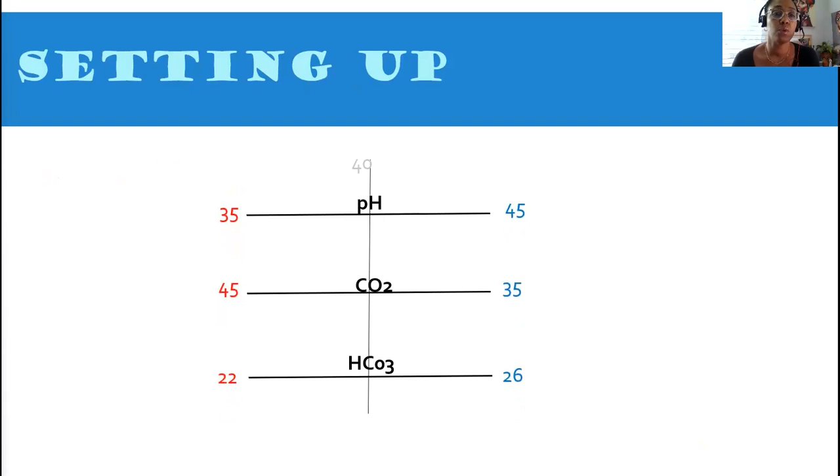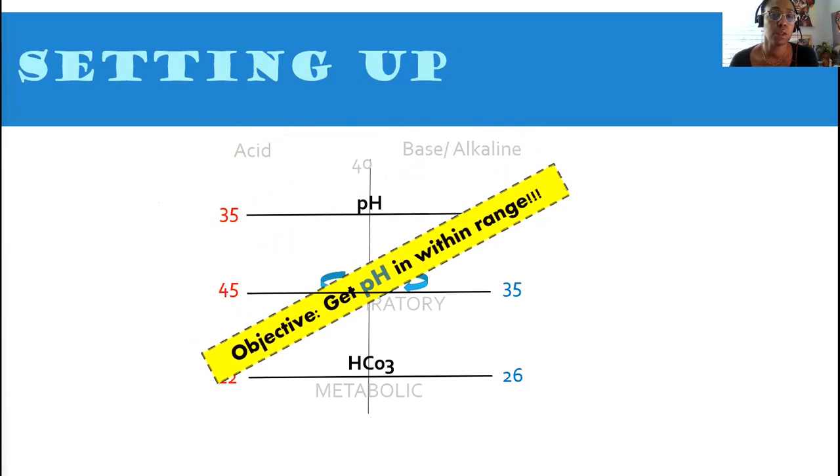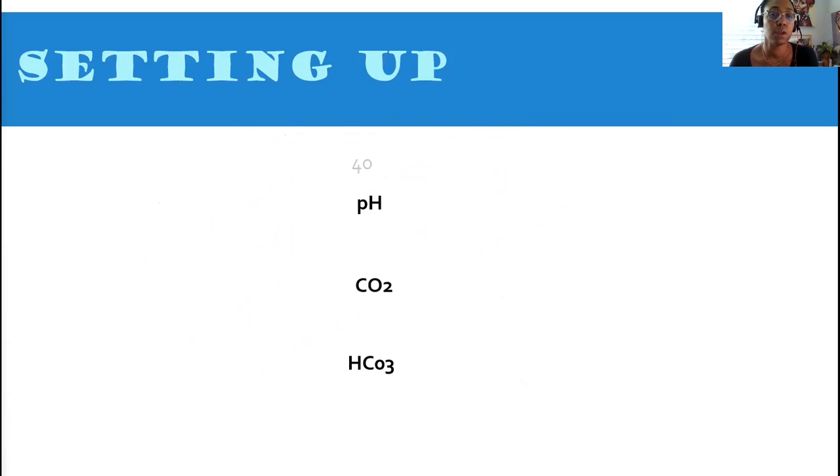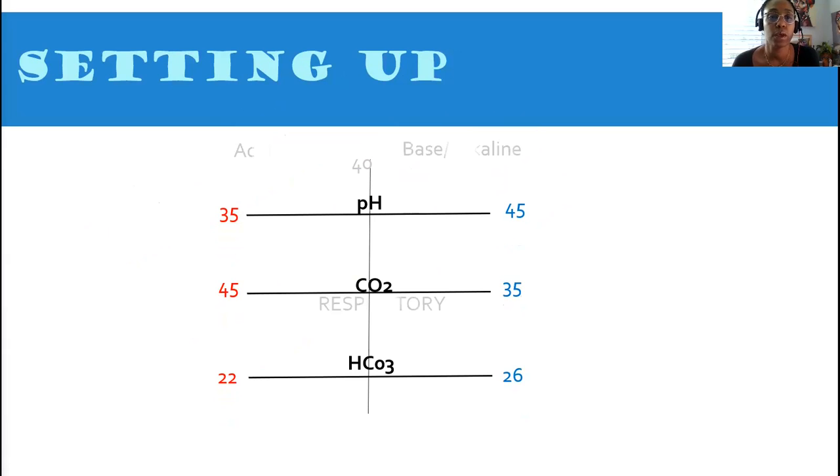You're going to put your normal ranges for your pH, which is 35 to 45. Your CO2, 45 to 35. But remember to switch up the range. We're going to put our pH, 35 to 45. CO2, 45 to 35. And our HCO3, the age you want to live forever, 22 to 26. Put that on your paper.